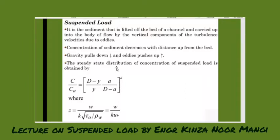Now the steady state distribution of the concentration of suspended load is determined by this formula which is C upon CA where C is the unknown concentration and CA is the known concentration at the height of A.